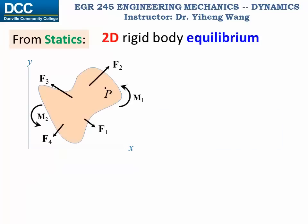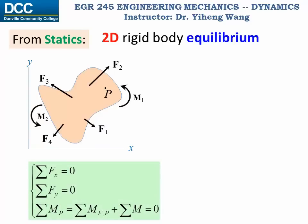For a 2D problem, the equilibrium conditions reduce to three scalar equations — normally these three, although you can write alternative equations: resultant force along the x direction equals zero, resultant force along the y direction equals zero, and the resultant moment summarized about any arbitrary point P equals zero. Based on these three scalar equilibrium equations, we're going to write the equations for motion in a similar format.